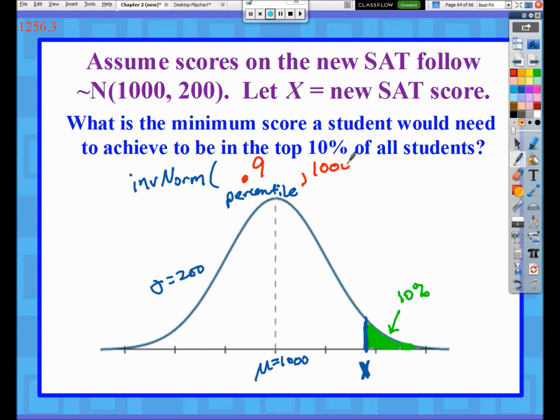Comma, 1000 still for the mean, comma 200 for the standard deviation. We know that score needs to be above 1000 to be in the top 10%. So if you get something below 1000, then you know you've done something wrong, because if you typed in 0.1 for the percentile, you're really going to figure out what score you would need to be in the bottom 10%.